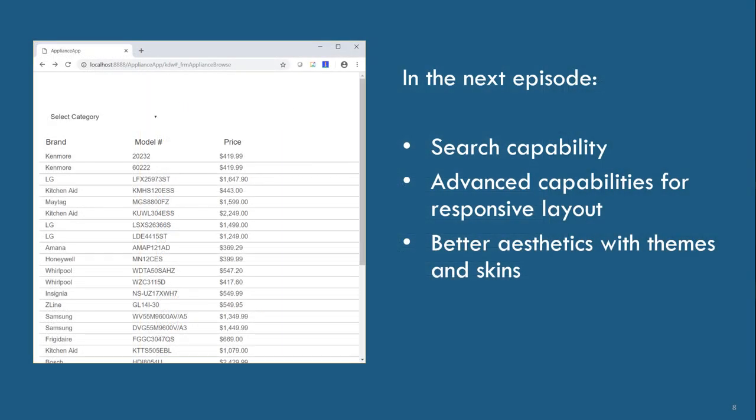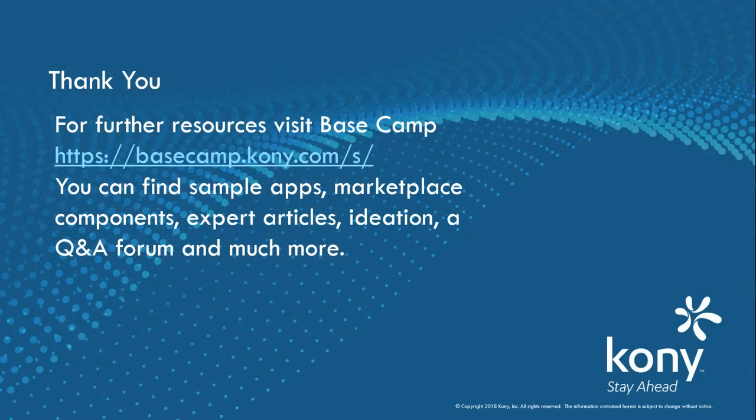The responsive design in the app right now is very basic and so are the cosmetics. In the next episode we will enhance the app in several ways — we'll add search capability, cover advanced capabilities for responsive layout, and work on making the cosmetics better with theming and skins. I hope you've enjoyed seeing how a basic responsive web app can be built quickly in Kony Visualizer. Besides the two additional episodes in this series, you can get access to all kinds of resources at Kony Basecamp — just visit the URL on your screen.